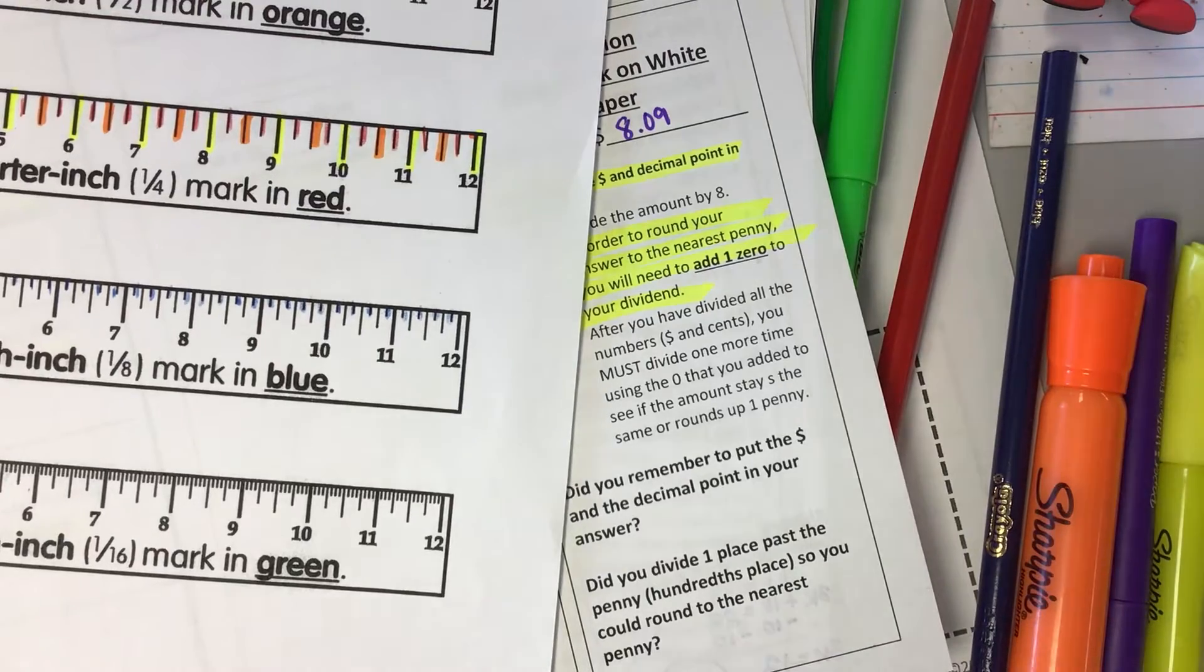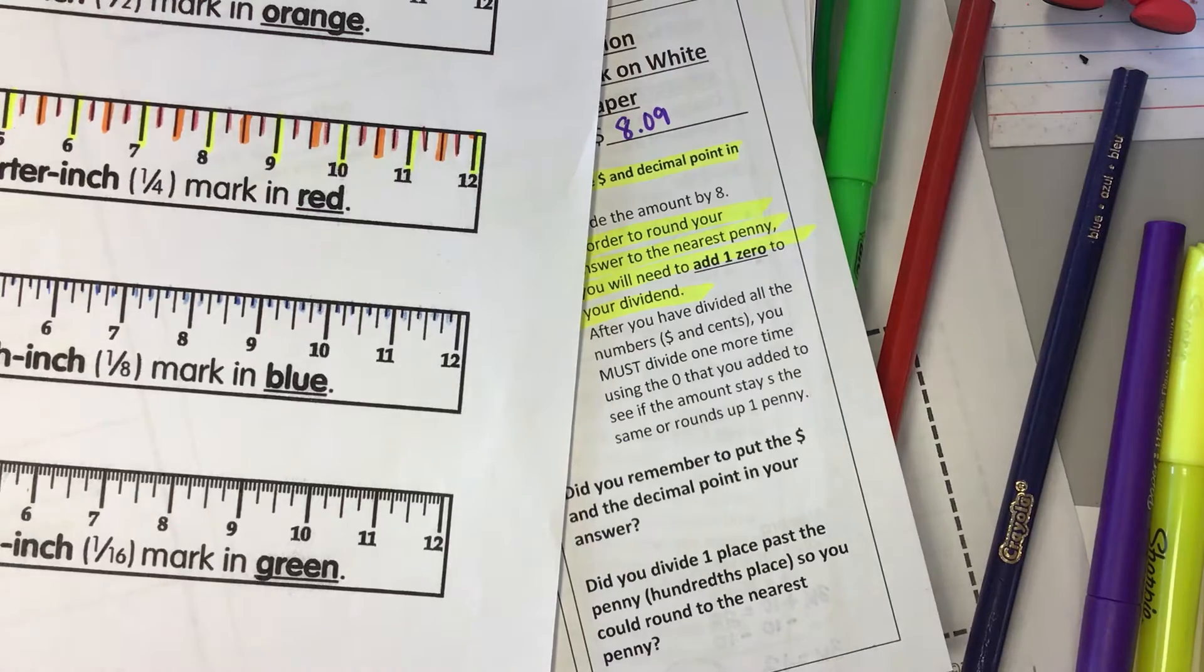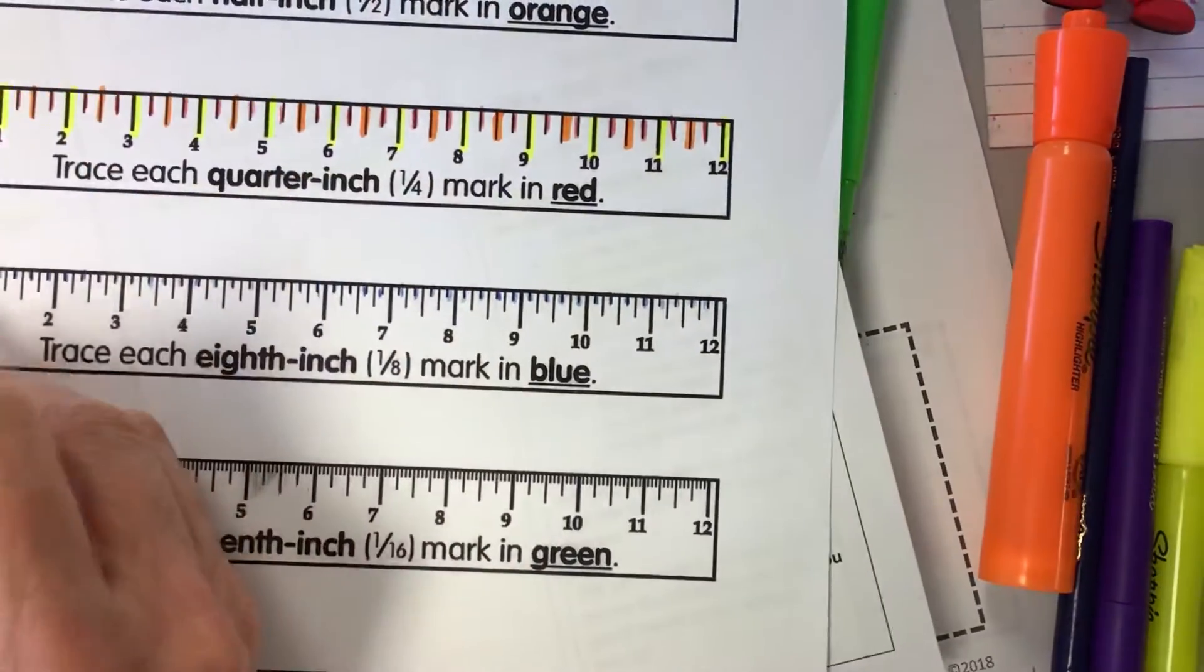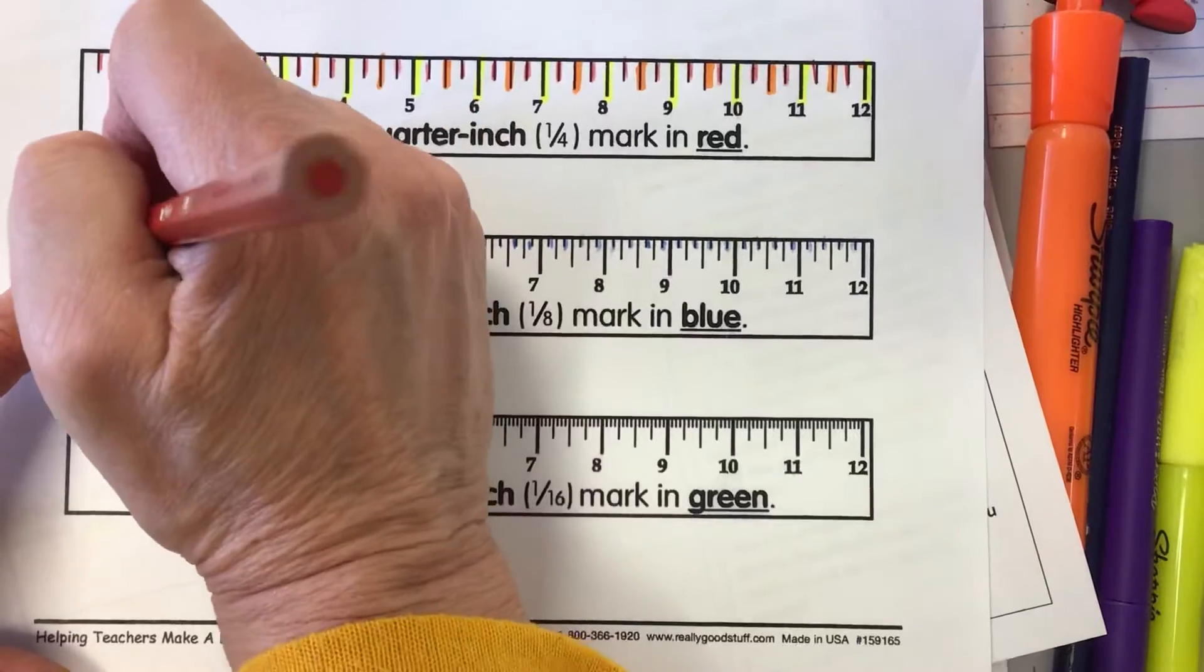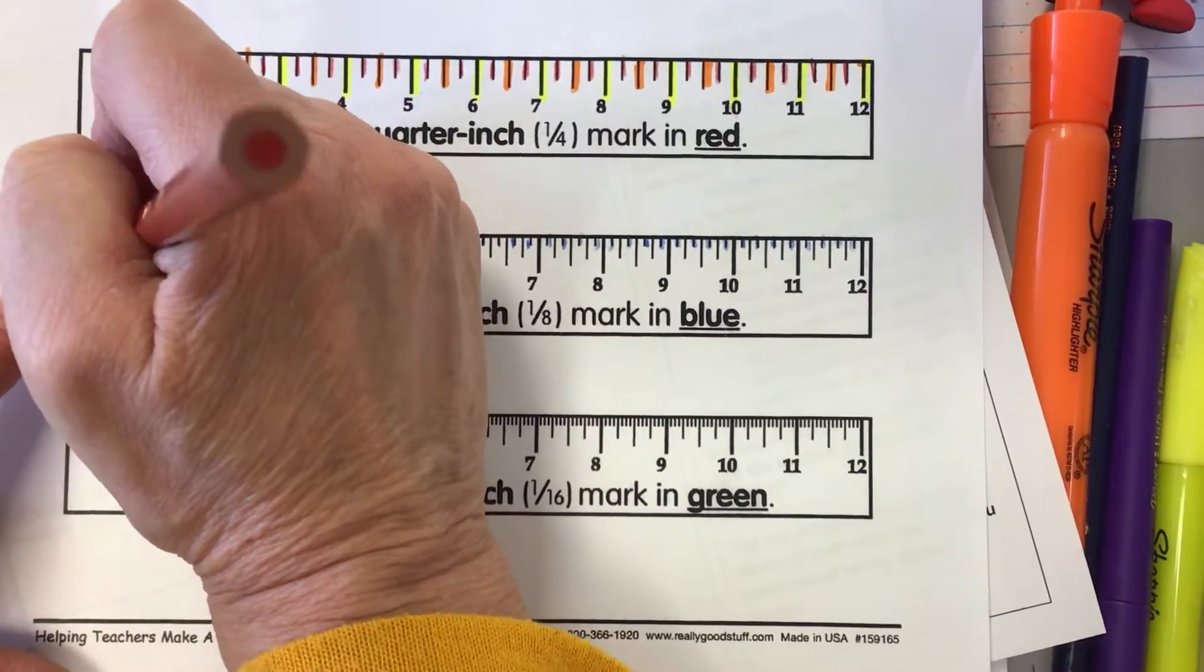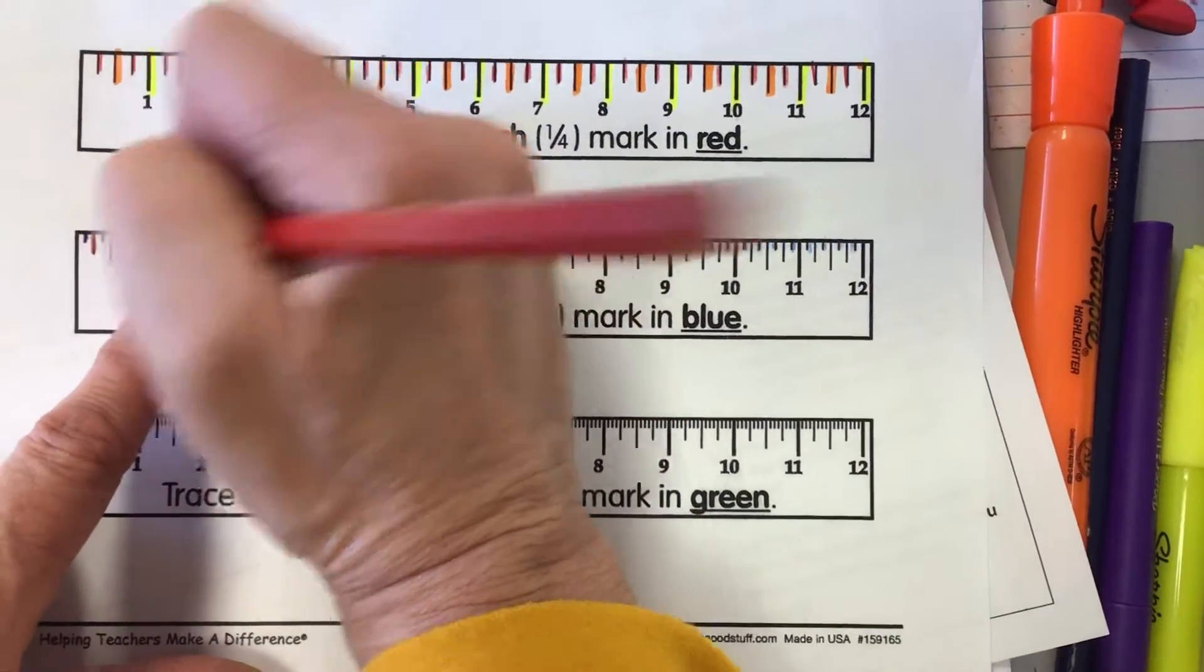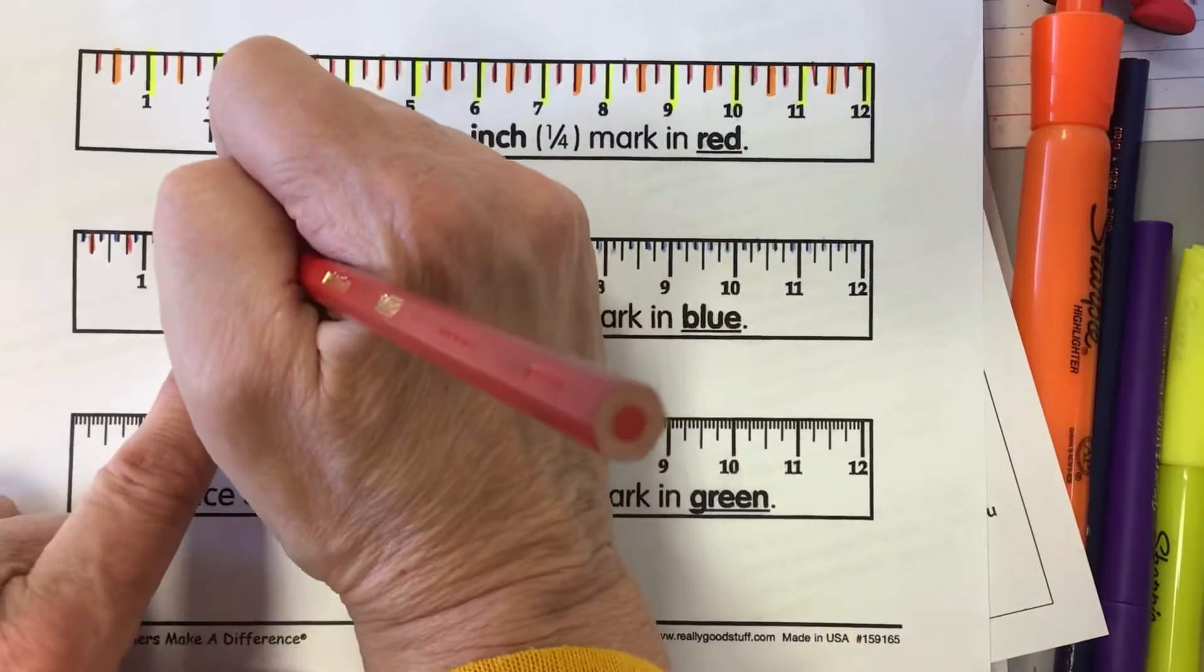Okay, then each one of our quarter inches are going to be red. So that's two-eighths or one-fourth, it's longer. Six-eighths or three-fourths. Two-eighths or one-fourth. Six-eighths or three-fourths.